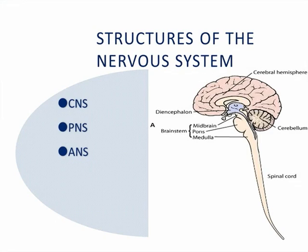The structures of the nervous system are composed of the central nervous system, which is the brain and the spinal cord; the peripheral nervous system, which includes both the cranial and the spinal nerves; and then the autonomic nervous system, which is our sympathetic and parasympathetic nervous system.